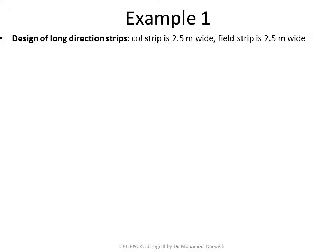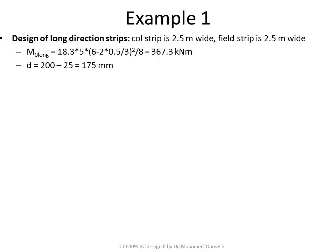Looking at the long direction strips: the column strip is 2.5 m wide and the field strip is 2.5 m wide. M₀ = 18.3 × 5 × (6 − 2×0.5/3)² / 8 = 367.3 kN·m — for the whole width, not per meter run. D = 200 − 25 = 175 mm. A_s minimum = 0.6BD/F_yield ≈ 292 mm².